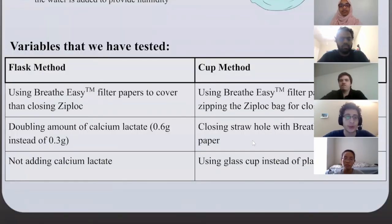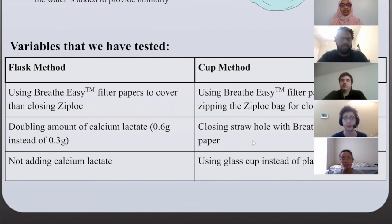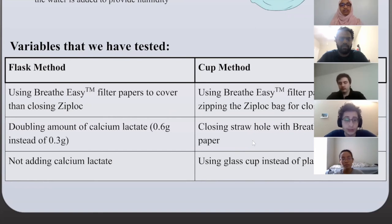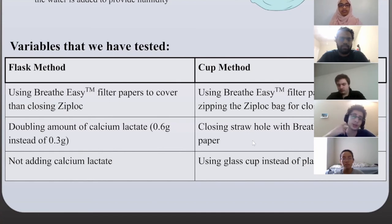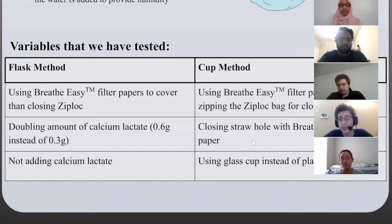Regarding these two methods, there were multiple variables that we tested to see if they would enhance or hinder the survivability of the embryos. One of these was the filter papers that would cover the eggs — for example, we used the Breathe-Easy membrane used for cell culturing to see if it would decrease the amount of infection the egg would get. We also tested different amounts of calcium lactate, even eliminating it at one point, to see if the egg would have enough nutrition on its own. For the cup method, we attempted using Breathe-Easy instead of a straw for the puncture hole, and used a glass cup instead of a plastic cup because glass can be more easily sterilized by autoclaving.